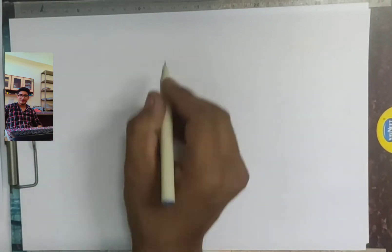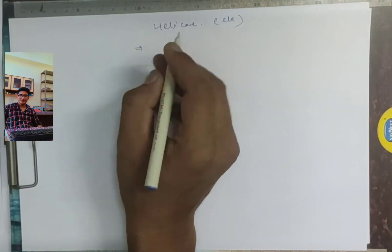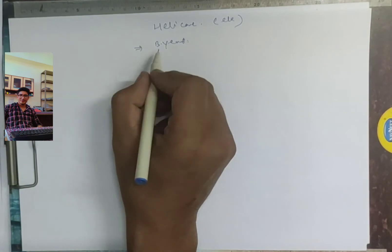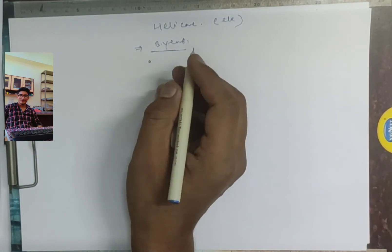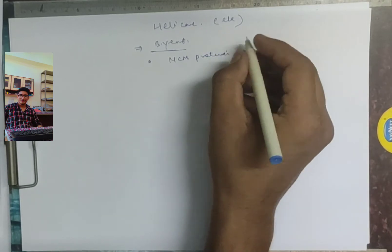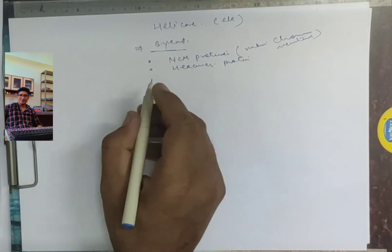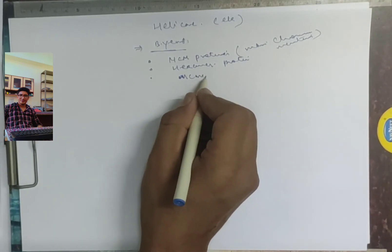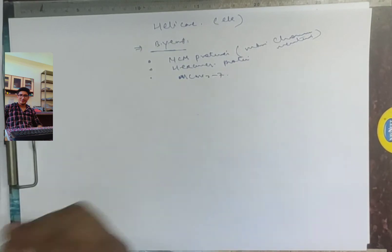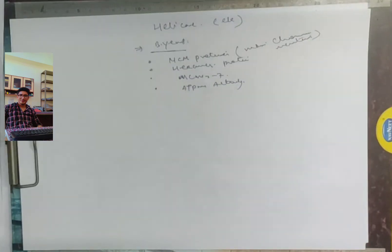Now let's talk about helicase in eukaryotes. The default model is budding yeast. In budding yeast, the helicase is the MCM protein — the mini-chromosome maintenance protein. It is also a hexameric protein.